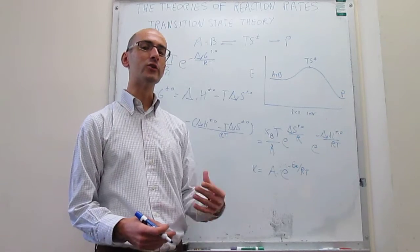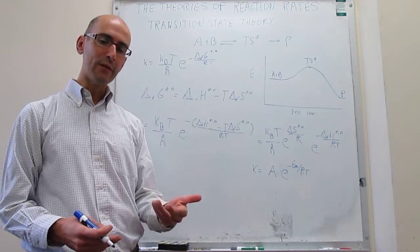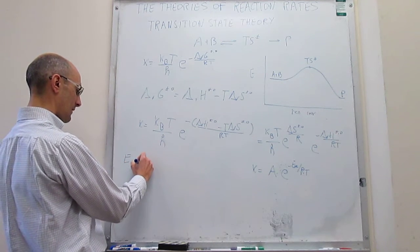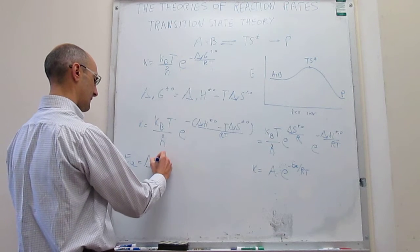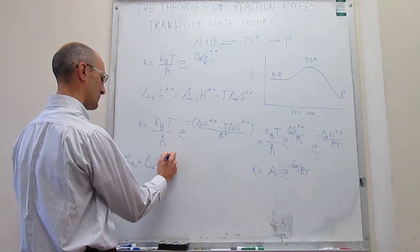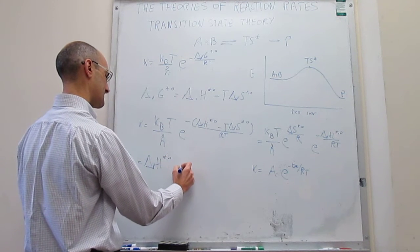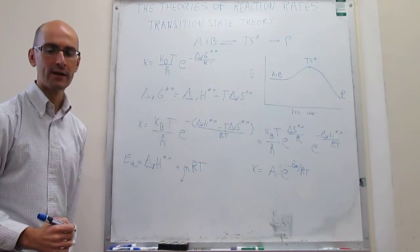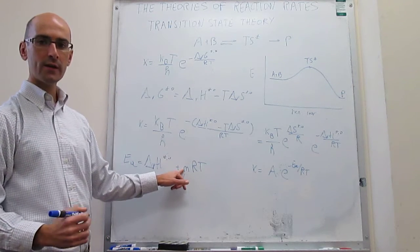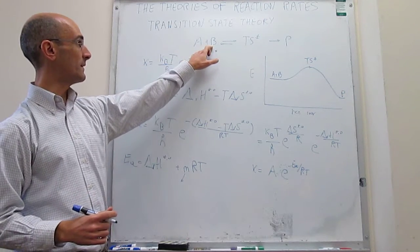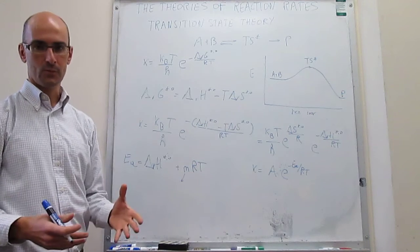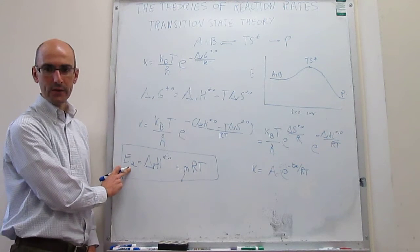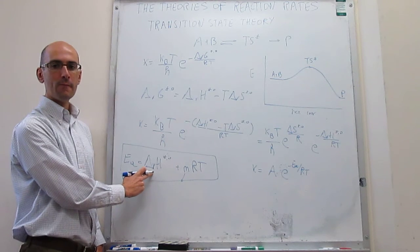The activation energy and the enthalpy are actually not exactly the same thing. We know that internal energy and enthalpy are almost the same but slightly different. The true relationship between activation energy and the enthalpy of activation is: E_A equals delta H of activation plus m times RT, where m is simply the molecularity of the reaction. If this reaction is unimolecular, m equals one; if it is bimolecular, as in this case, m equals two. This is a very important expression because it allows you to connect a parameter in the Arrhenius expression with something that comes from transition state theory.